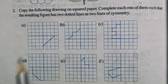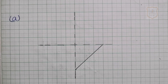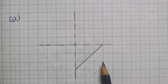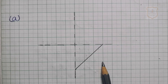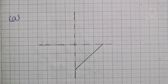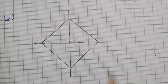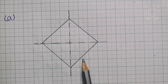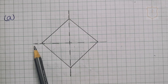Now shape A. So students, shape number A — this incomplete shape is given in your textbook. First we have to draw it on a graph paper and then complete it in such a way that the 2 dotted lines will be the 2 lines of symmetry. In this way you have to complete the shape, and here you can see that this shape has 2 lines of symmetry.